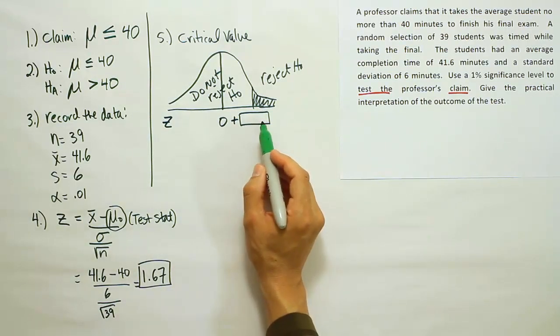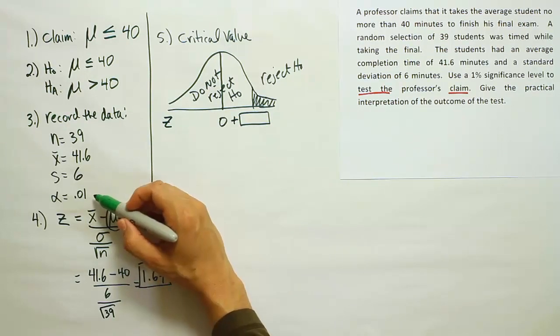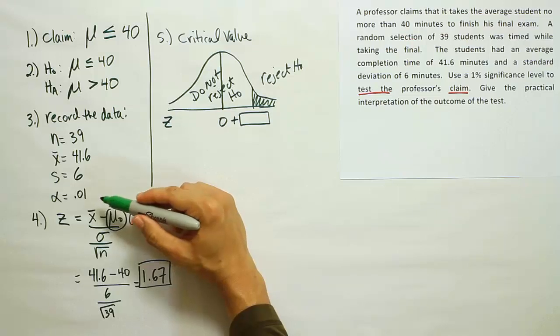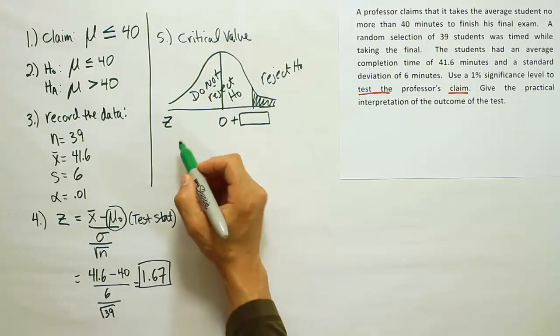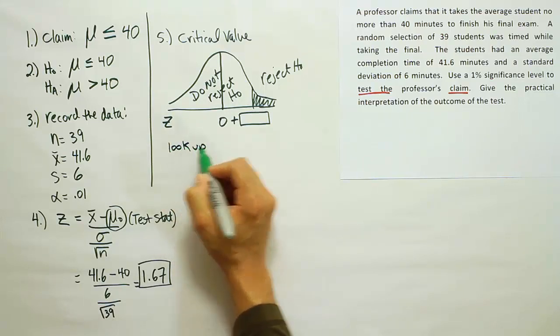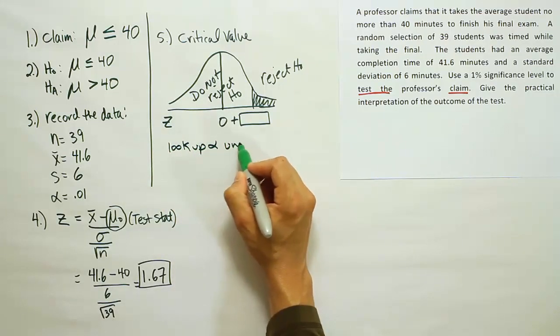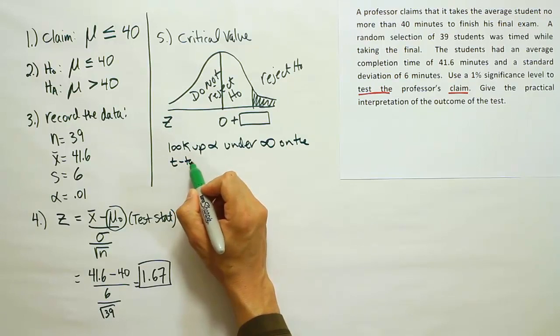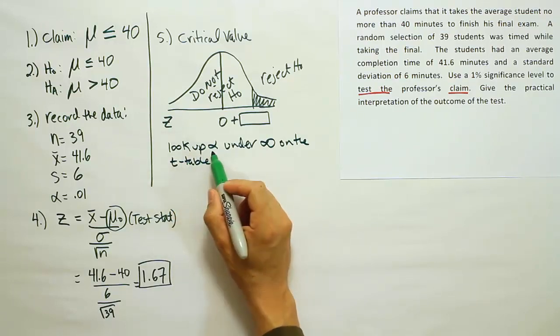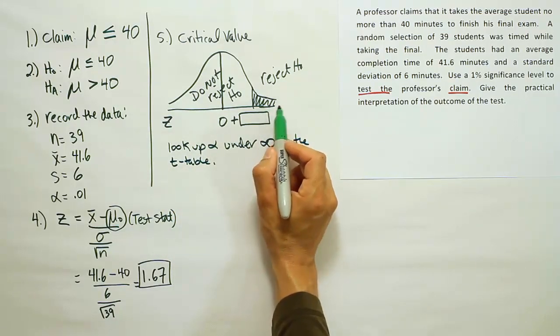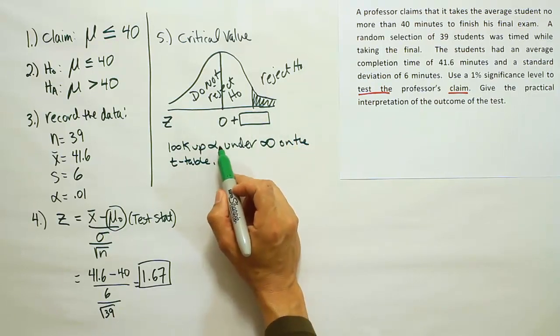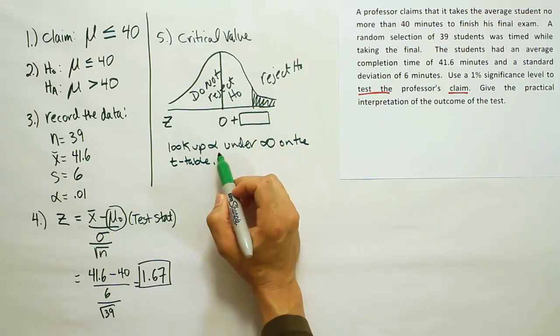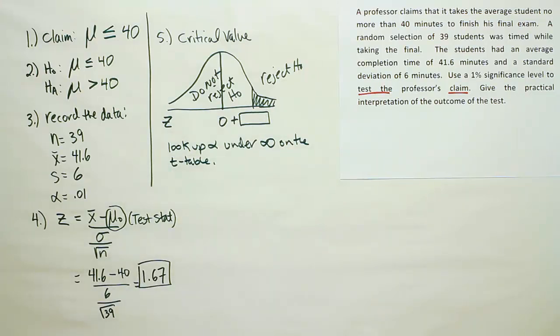So again, how do we get the number for here? Well, as long as our alpha value is something we can find on the t-table, we'll use the t-table and use the last row of it to get the large infinity values, which are basically the z-score values. So let's go down and look up alpha under infinity on the t-table. Remember, we look up alpha whenever it's a one-tailed test. If it's a two-tailed test, we look up alpha divided by two. So in this case, one tail, we just look up alpha.